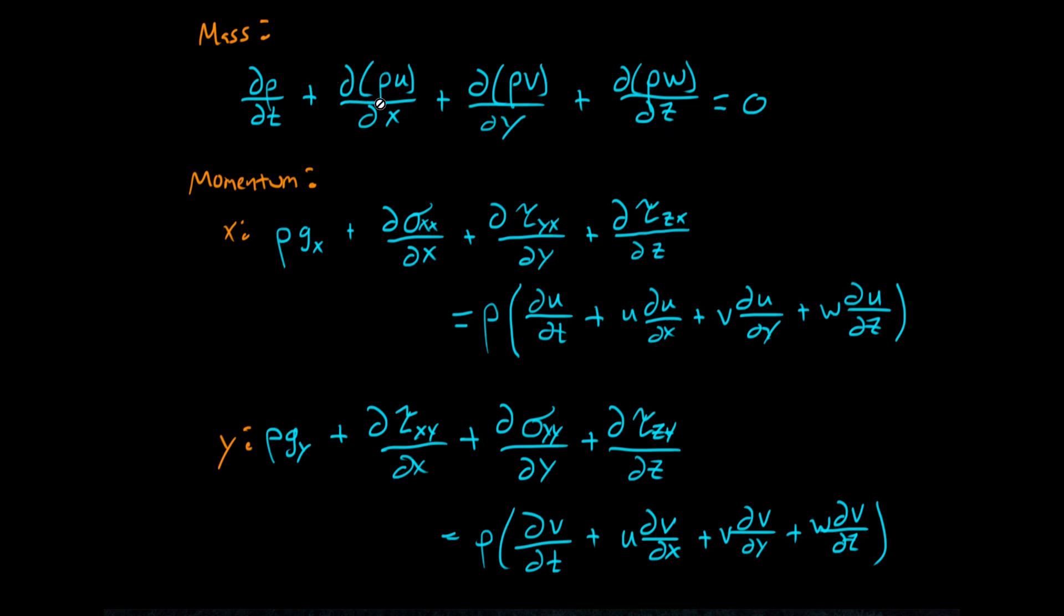And you'll notice that the velocity components that show up in each of these are corresponding with those directions. And so this is the u or the x velocity, the v is the y velocity, and w is the z velocity. And so you have this transient term here, and then you have the three spatial terms.